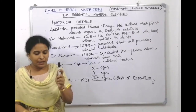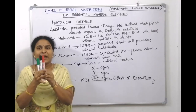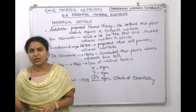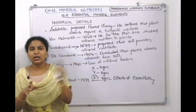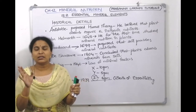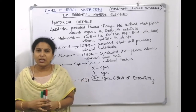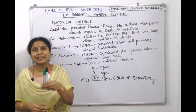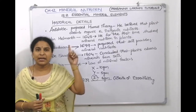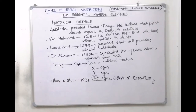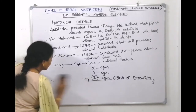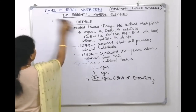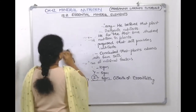If any element fulfills all three points, yes, it is an essential element. If the element fails to fulfill even one of the three points, call it a non-essential element. That is the rule called criteria of essentiality. Now let us go through the three points one by one. In NCERT they mention this topic but did not mention the scientists' names or the year, which we have added.